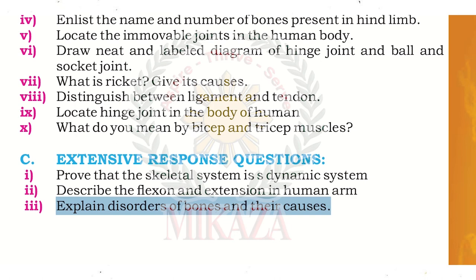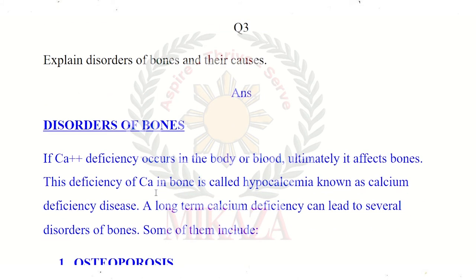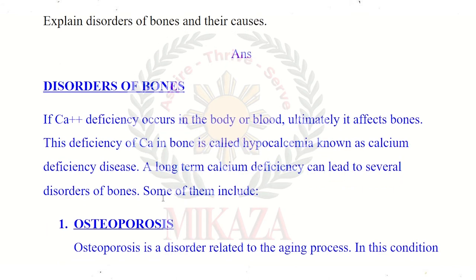The last question: explain disorders of bones and their causes. If calcium deficiency occurs in the body, it ultimately affects the bones. This deficiency of calcium in the blood is called hypocalcemia, known as calcium deficiency disease. A long-term calcium deficiency can lead to several disorders of bones. If we have calcium deficiency over many years, our bones will be most affected.